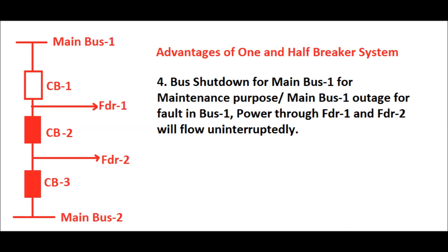Another advantage: consider a bus shutdown for main bus 1 for maintenance purposes, or a main bus 1 outage due to a fault. Power through feeder 1 and feeder 2 can still flow uninterruptedly. Feeder 1 receives power via main bus 2 with CB3 and CB2 in closed positions, and feeder 2 receives power through main bus 2 via CB3 in closed position. So an outage of main bus 1 does not interrupt power to feeder 1 or feeder 2.